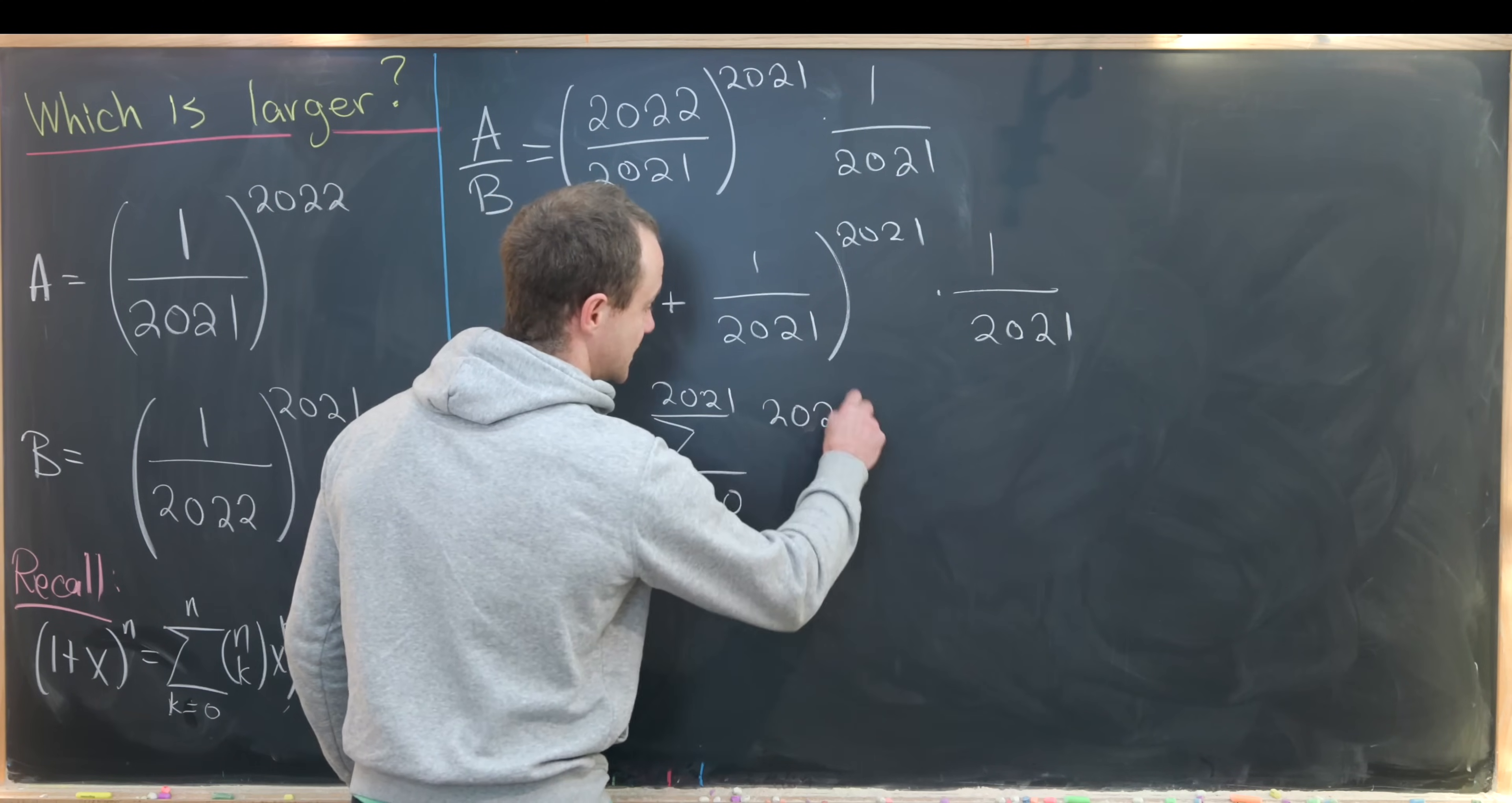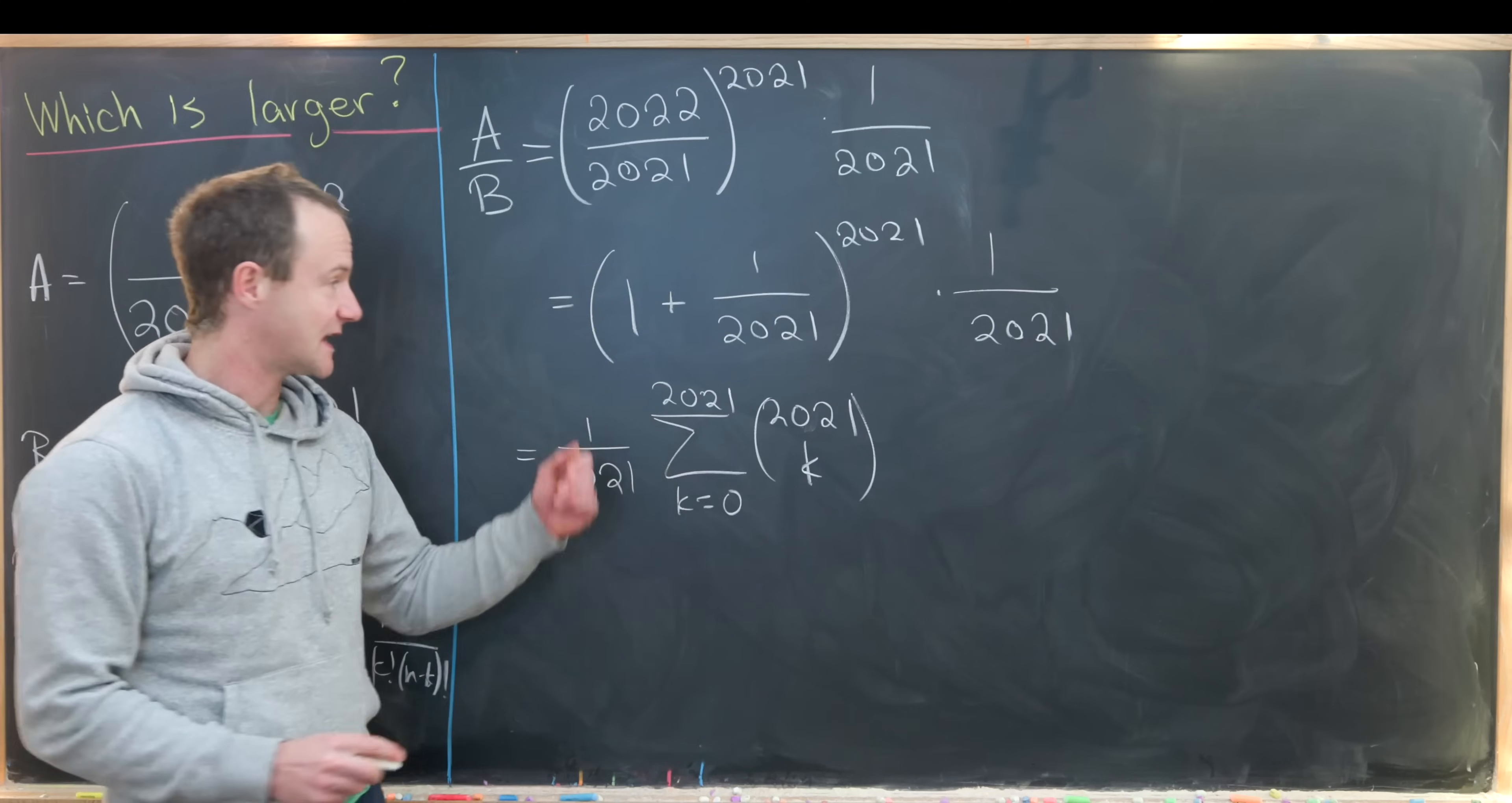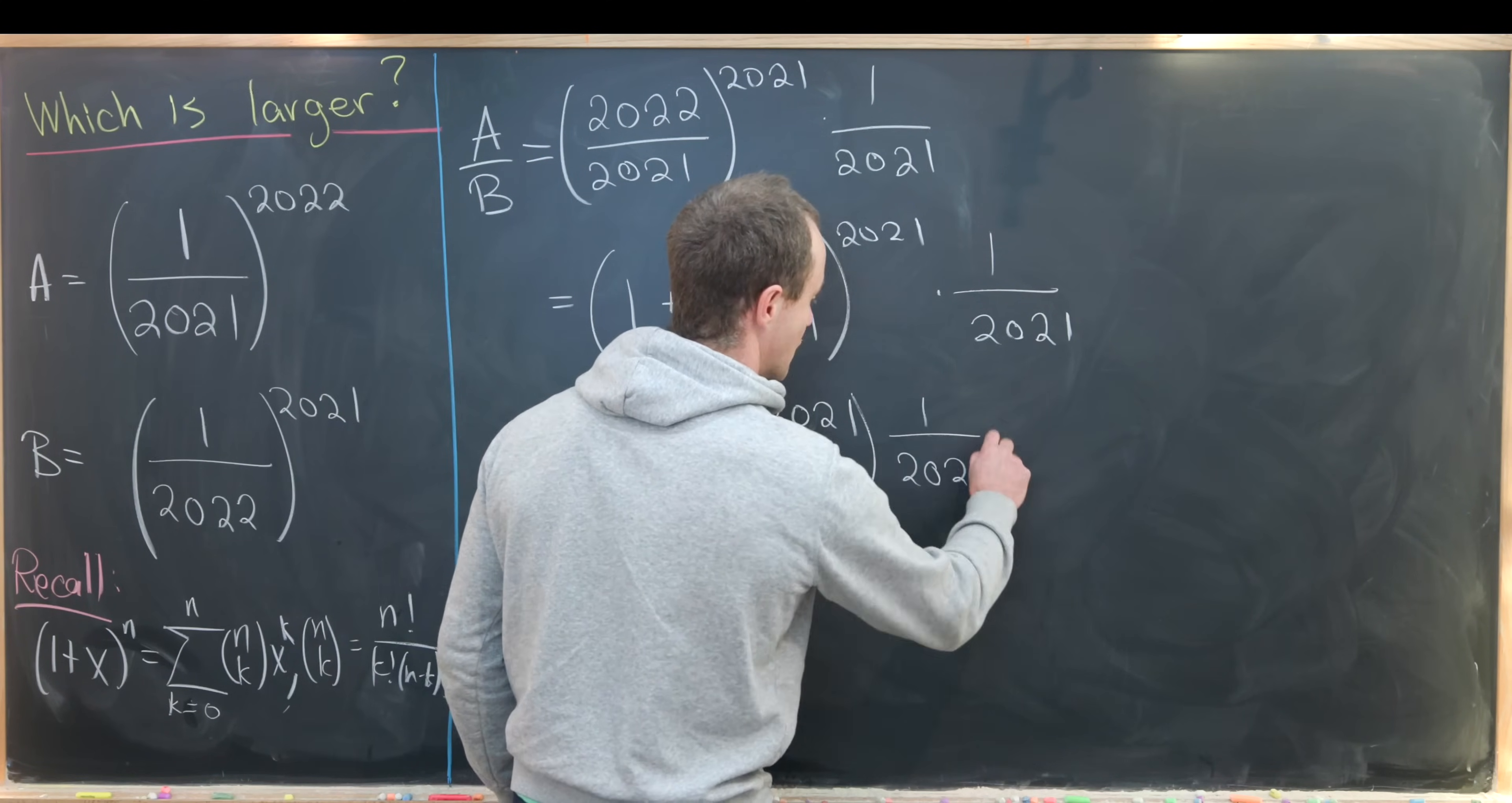Then I'll have the sum as k goes from 0 up to 2021, then I'll have 2021 choose k, and then x to the k here will be 1 over 2021 to the k.